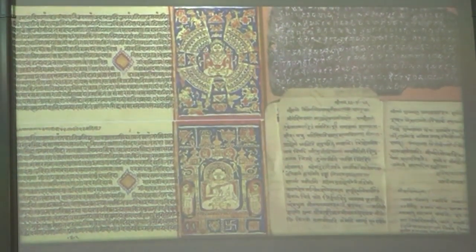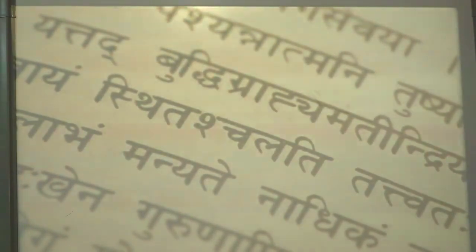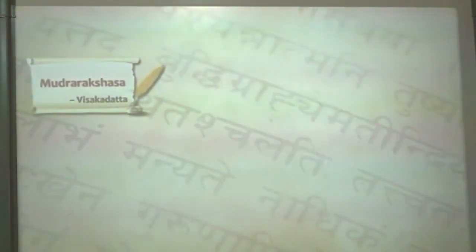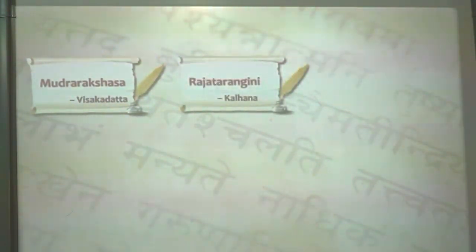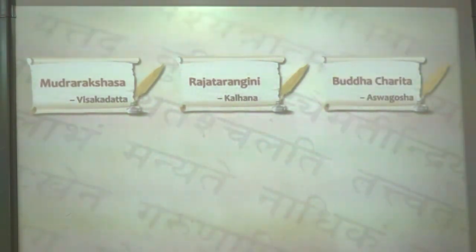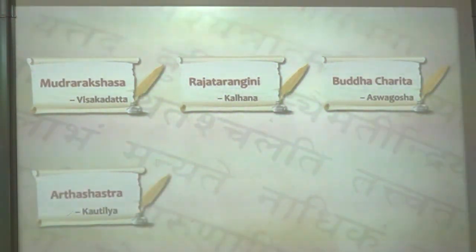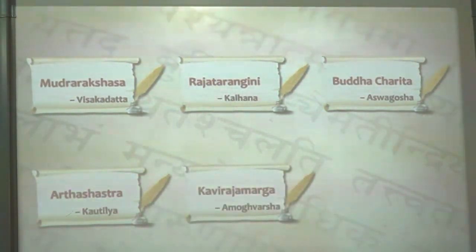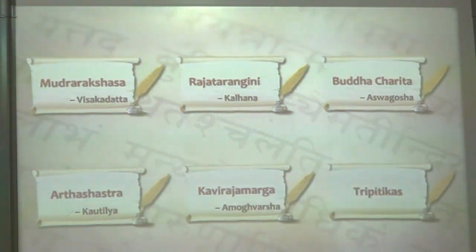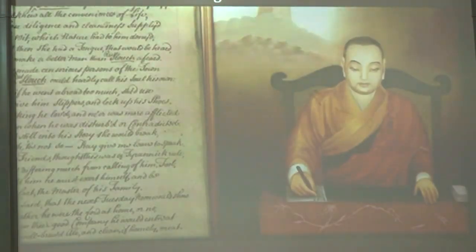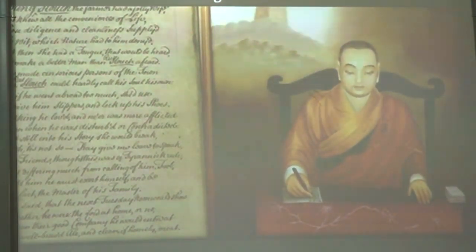Literary sources are original sources of information in the form of documents or recordings created in the past. There are two kinds of literary sources of history: native literature and foreign literature. Native literature is the literature produced by the indigenous people. Some examples of native literature of India are Mudrarakshasa, Kadambari, Rajatarangini, Ashvaghosha's Buddhacharita, Kautilya's Arthashastra, and the Tripitikas. Foreign literature refers to the writings of foreign visitors, explorers, and scholars.